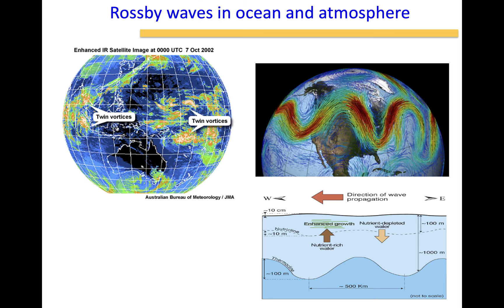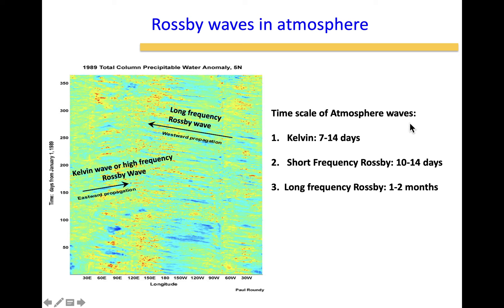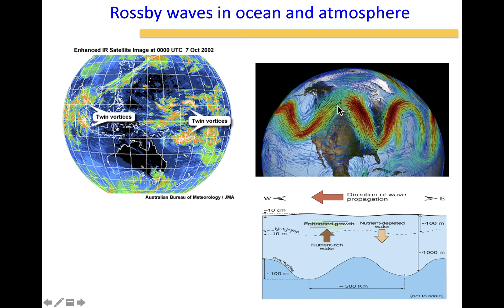These are the different types of Rossby waves encountered in ocean and atmosphere. The equatorial Rossby wave and the oceanic Rossby wave both move from east to west on long time scales, and since Rossby waves are dispersive, energy may travel faster or slower than the wave itself. The mid-latitude Rossby wave — the jet stream — is the short frequency Rossby wave, with a time scale of 10 to 14 days, and these waves are also dispersive, so energy may lead or lag the wave itself.